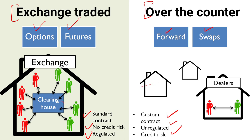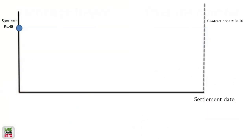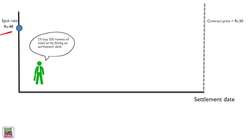We are going to discuss options, futures, forwards, and swaps in the next sessions. For basic understanding: if the spot price of a commodity is 50 rupees and you say 'I will buy 100 tons of steel at 50 rupees per kg on the settlement date,' that means you expect prices to go up — you have a long position. Somebody who says 'I'm going to sell at that particular date' expects prices to go down — that is shorting.